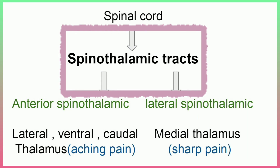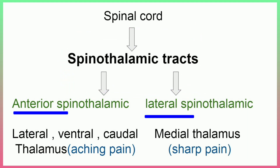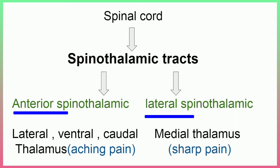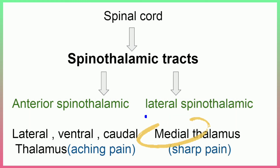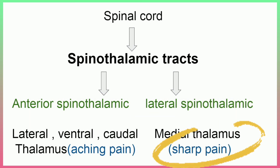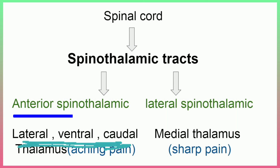The pain impulse is transmitted to the higher centers with the help of the spinothalamic tract — both the anterior and the lateral spinothalamic tract. The anterior spinothalamic tract carries sharp pain, while the lateral spinothalamic tract carries the pain impulse to the ventral and caudal thalamus, transmitting dull aching pain. This is how pain is transferred from the periphery to the spinal cord and from the spinal cord to the higher centers.